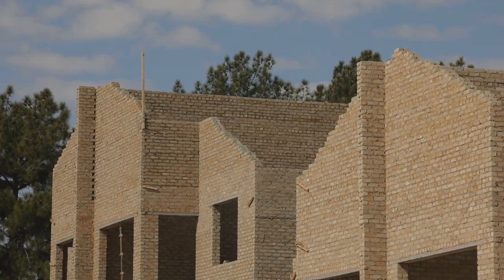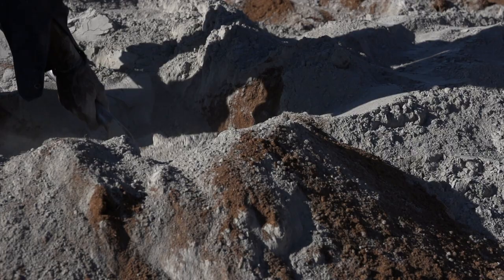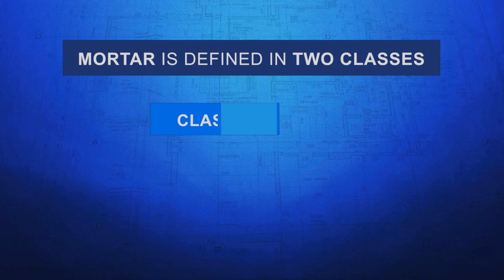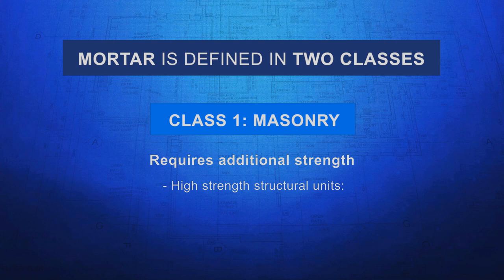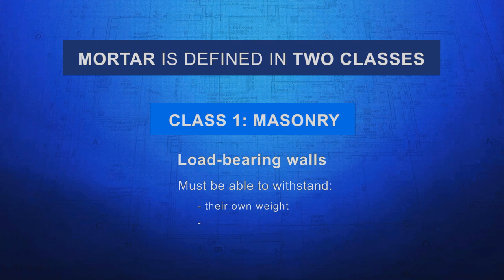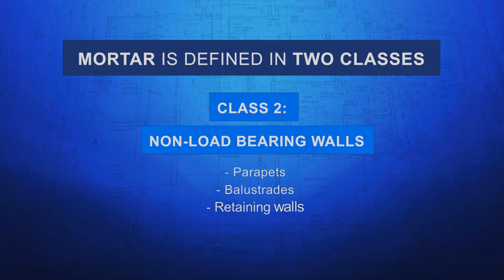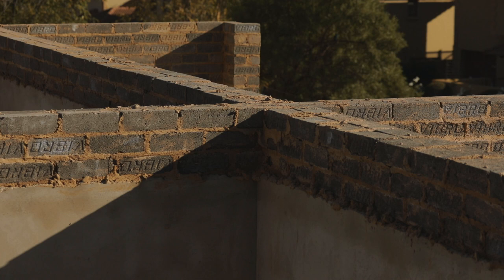The superstructure is the bulk of the building and covers everything from the top of the foundation to the roof height. Before you begin to build the walls of the superstructure, a damp proof course must be placed underneath the walls. Then you need to ensure you have the correct mix of mortar for the type of brick or block you are using. Mortar is defined in two classes. Class one is for masonry that requires additional strength, which includes high strength structural units such as multi-storey buildings, load-bearing walls, and reinforced masonry. Load-bearing walls must be able to withstand their own weight, imposed weight such as a person standing on the wall, as well as strong wind. Class two is for non-load-bearing walls like parapets, balustrades, retaining walls, freestanding garden walls, and other walls that may be exposed to extreme damp. A load-bearing wall is a wall that has weight on it from above. This table illustrates the different mortar classes and mixed proportions.